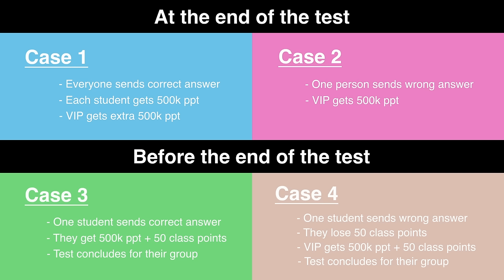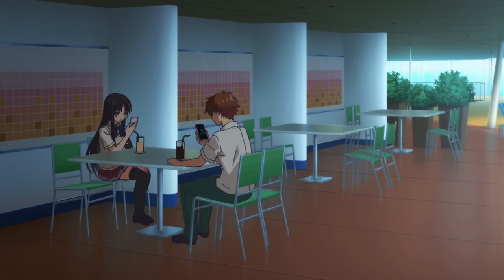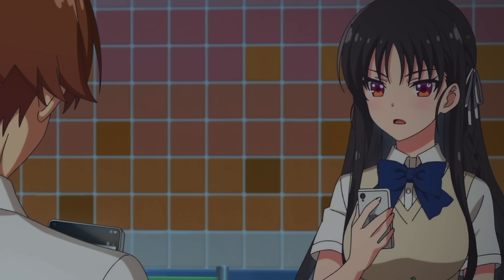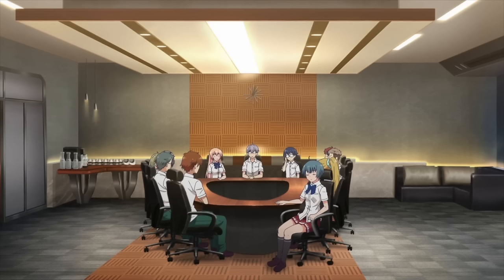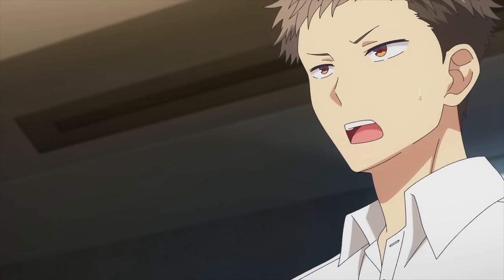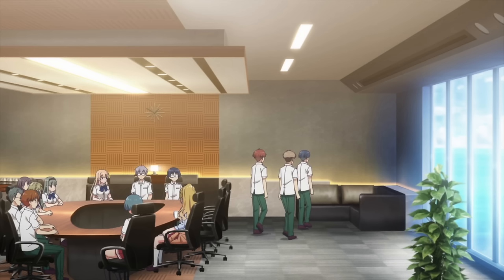There are four outcomes. In all cases, if the VIP's classmate sends a correct or wrong answer, it will be deemed invalid and the test continues. On the day of the exam, neither Kiyotaka nor Suzune are VIPs. At the first discussion, most of Kiyotaka's group wants to go with Case 1. However, Class A stays silent to avoid Case 3.